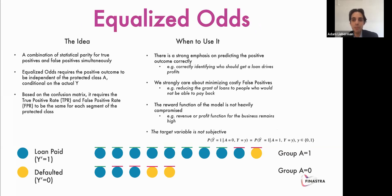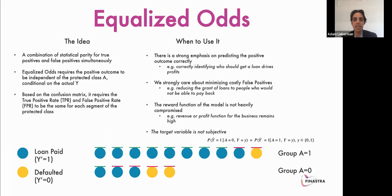Equalized odds is a combination of statistical parity for true and false positives. It requires the outcome to be independent of the protected class for the groups, conditional on the actual ground truth — we need the same true positive rate and false positive rate for each segment of the protected class. In group A equals 1, all those with Y equals 1 were classified as positive. Similarly, in group A equals 0, all those classified as Y equals 1 were also classified as positive. Of the population A equals 1 that obtained Y equals 0, one was classified as positive, giving a 50% false positive rate. Similarly, in the second group, two individuals are given positive prediction, corresponding to a 50% false positive rate. The false positives and true positives match up and equalized odds is satisfied.